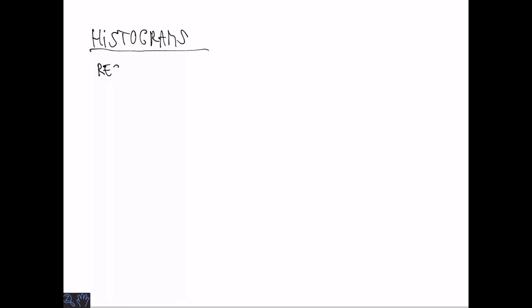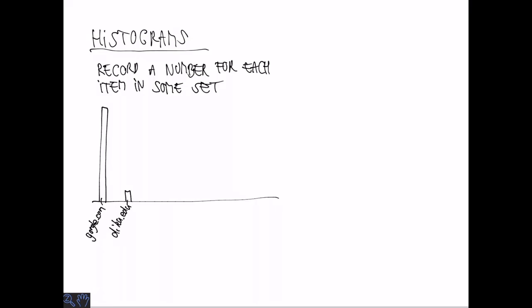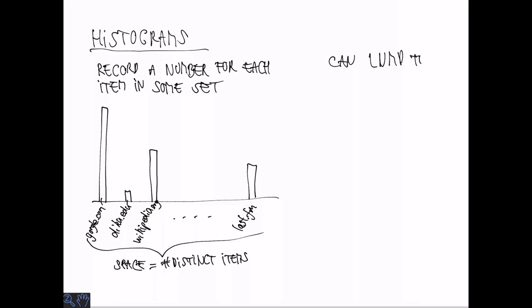Now let's go to something related but using very different techniques. So in school you probably learned about histograms. Histograms record a number for each item in some set. So it's closely related to what we're looking at here. So a histogram could look something like this for website visits. So you have like a column for each number that you care about and you put them next to each other. Clearly the space for storing such a histogram depends on the number of distinct things you want to count. So the number of distinct items. And obviously this can be pretty large in the case of websites and so on.